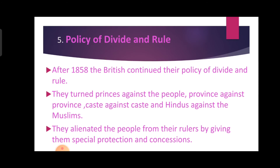The fifth result is the policy of divide and rule. After 1858, the British continued their policy of divide and rule. They turned princes against the people, province against province, caste against caste, and Hindus against Muslims. They alienated the people from their rulers by giving them special protections and concessions.